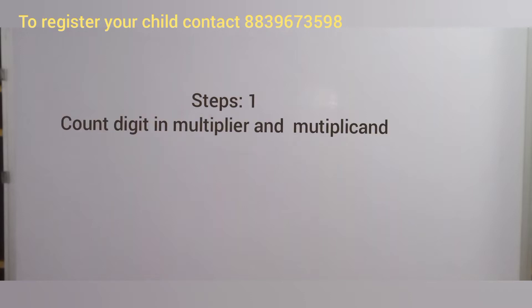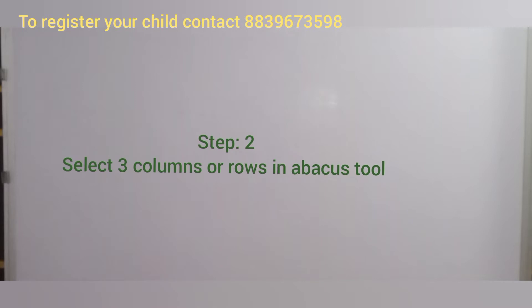The first step to multiply is to count the digits in the multiplier and multiplicand. 23 has 2 digits and 4 has 1 digit, so the total number will be 3. We will select 3 columns or rows in the abacus tool.